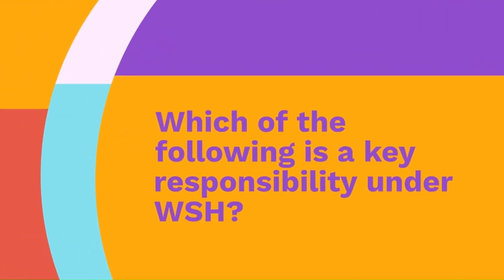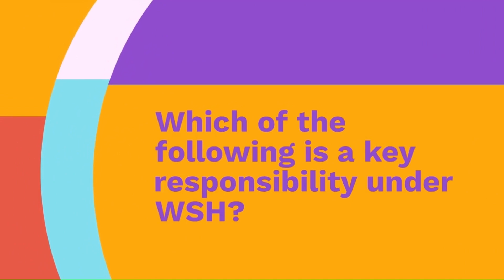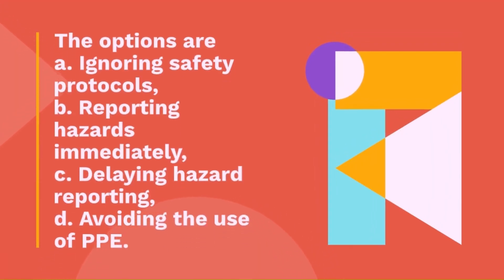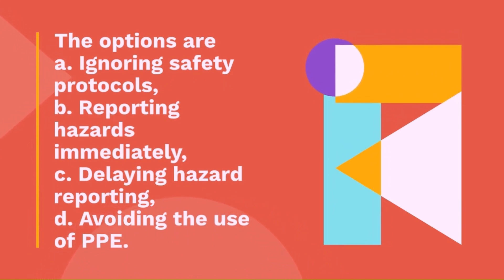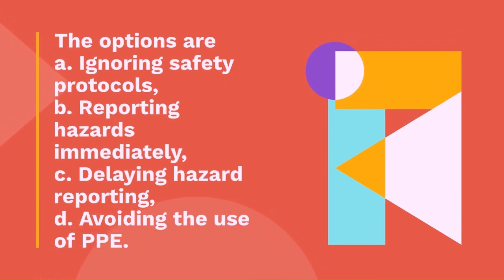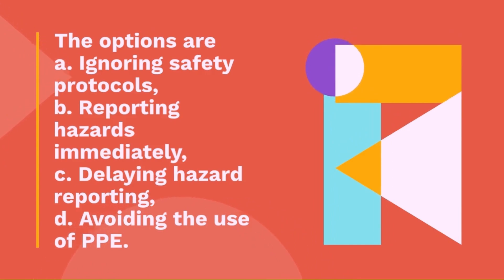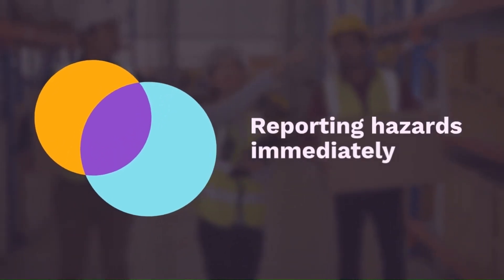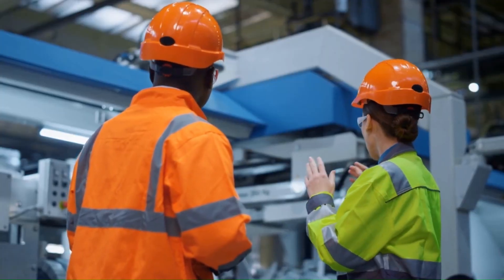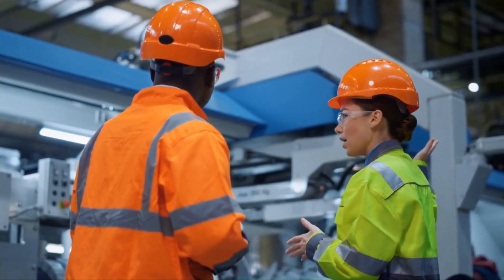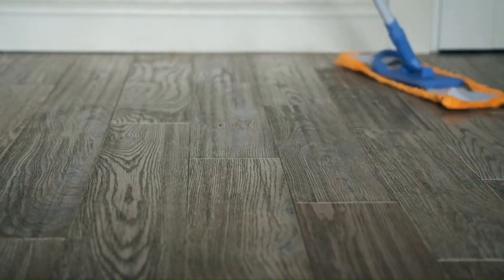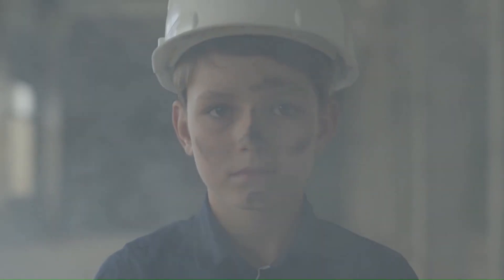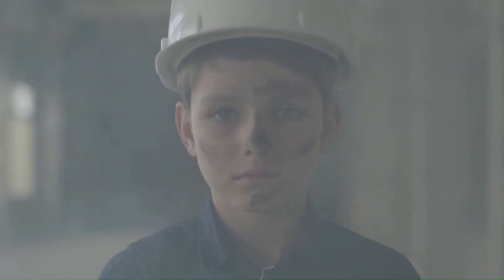Question 15: Which of the following is a key responsibility under WSH? The options are: A — ignoring safety protocols, B — reporting hazards immediately, C — delaying hazard reporting, D — avoiding the use of PPE. The correct answer is reporting hazards immediately. Reporting hazards is like telling someone there is a spill on the floor — it prevents others from slipping and getting hurt. Timely reporting of hazards can prevent accidents before they happen.